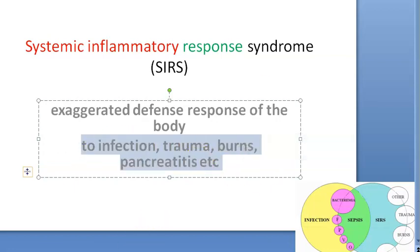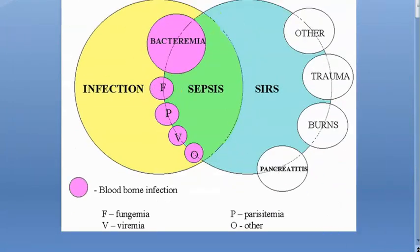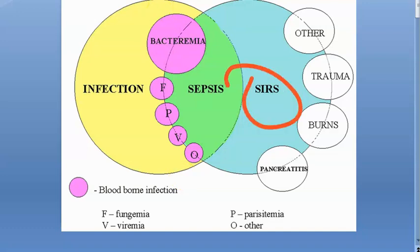So you understood what SIRS is. Look at this image here. There is infection. Infection can lead to bacteremia, which can further lead to sepsis. And as a response to sepsis, the body will do a Systemic Inflammatory Response. The Systemic Inflammatory Response not only happens as a response to infection — it can also happen as a response to trauma, burns, pancreatitis, etc. So SIRS is not specific to infection.